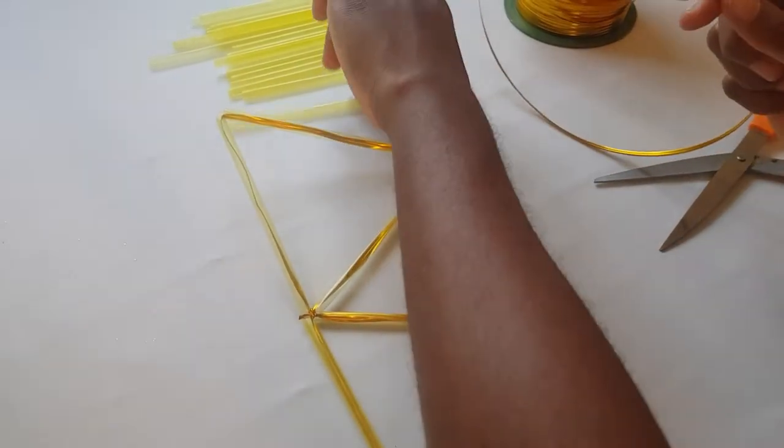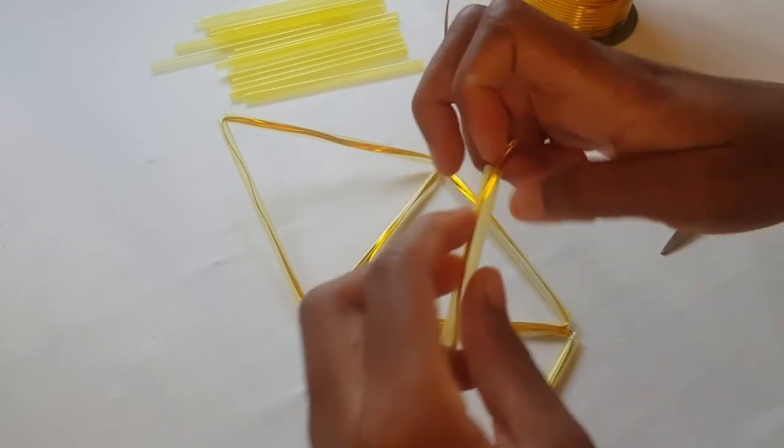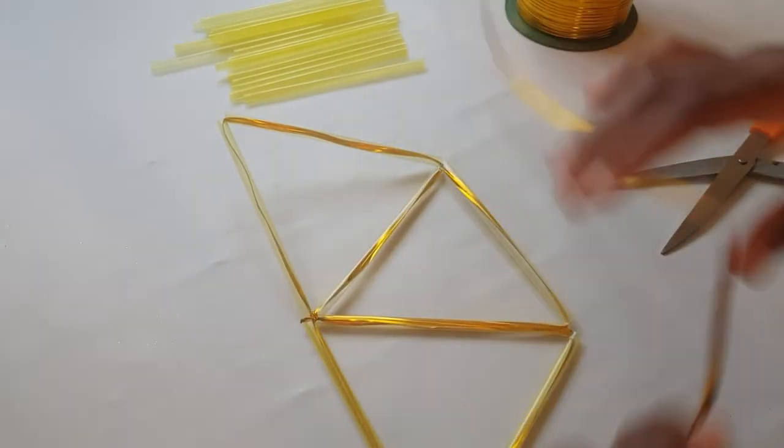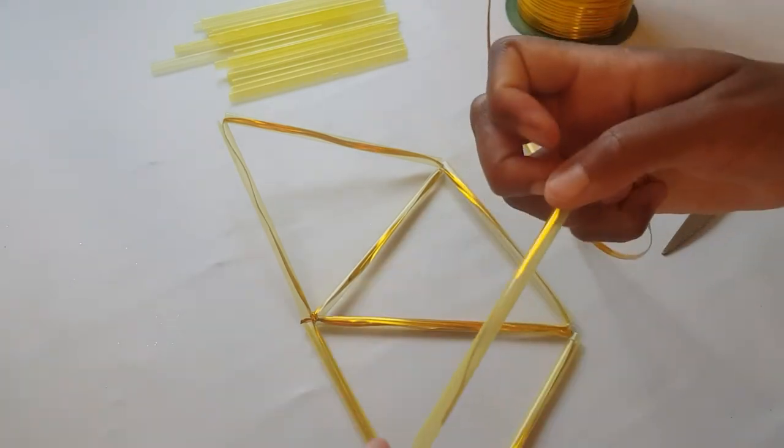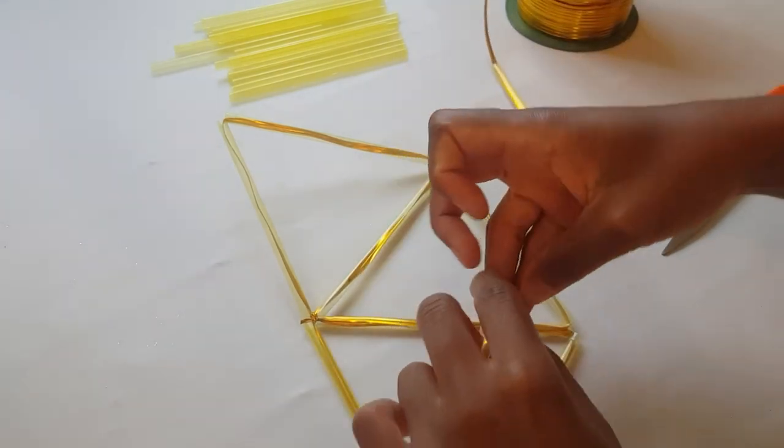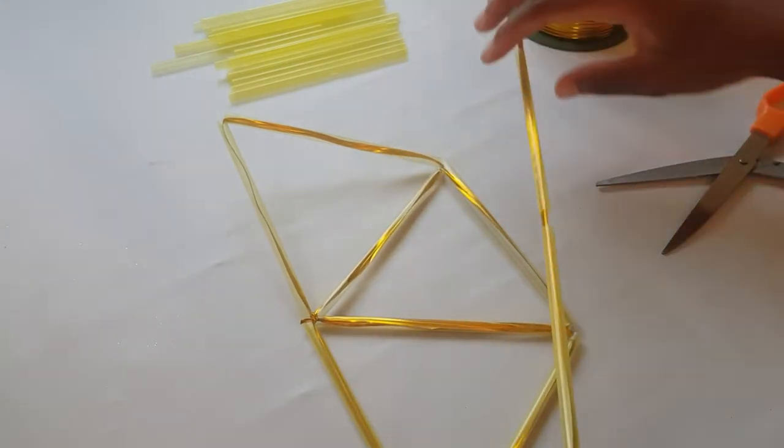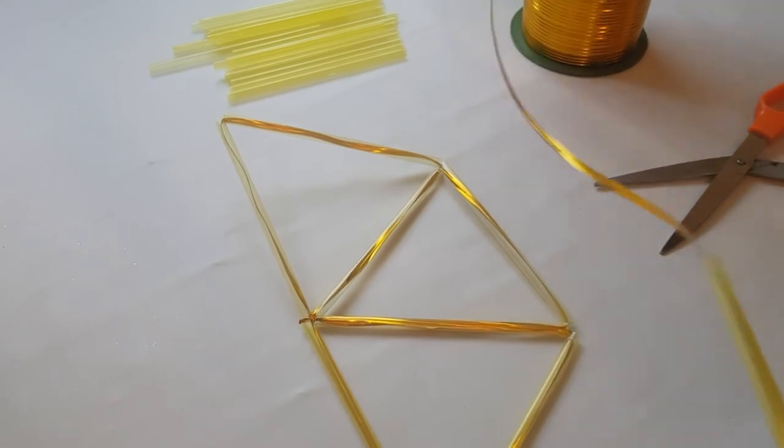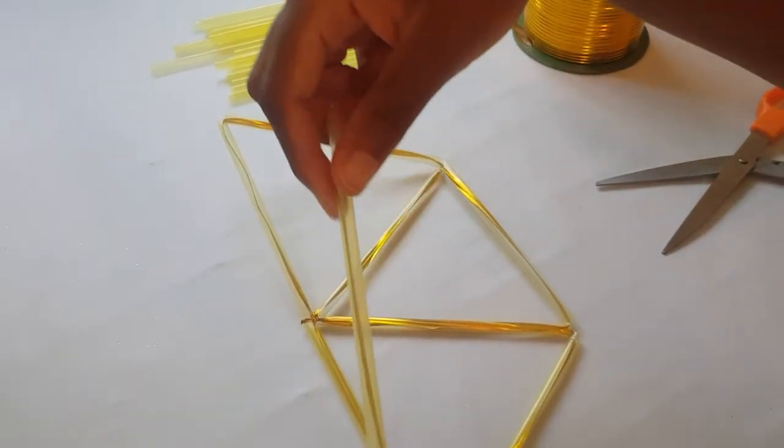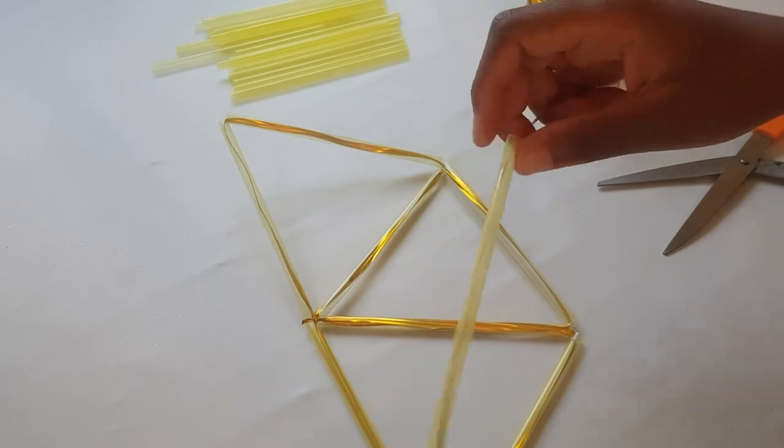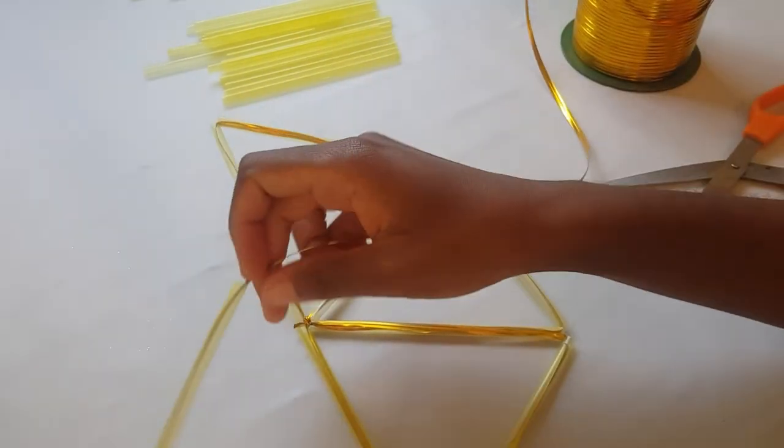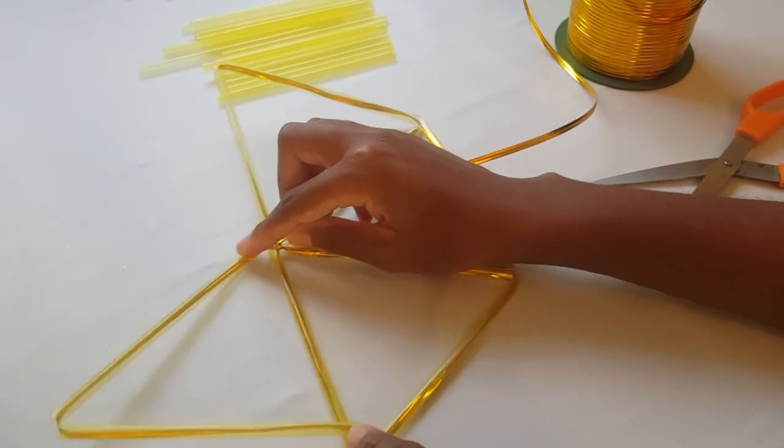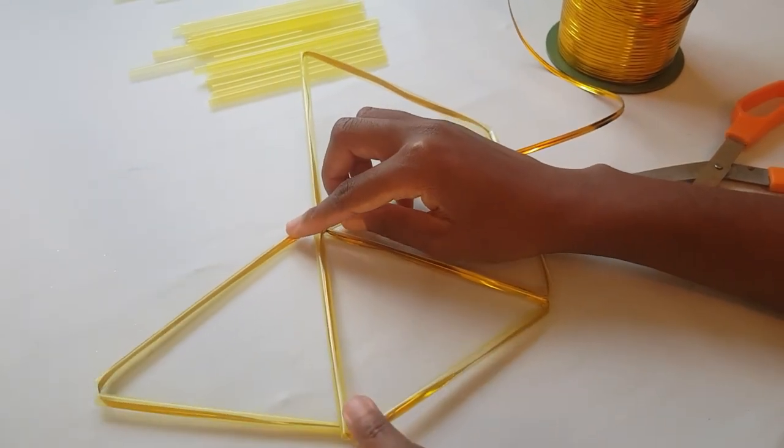So this is what we have so far. We're just going to keep doing this until we've almost made a kind of a circle. This is something I think you have to watch because it's kind of hard to explain, but you just have to look and learn. We're going to attach the next triangle right here.